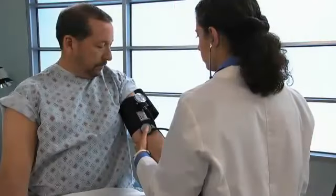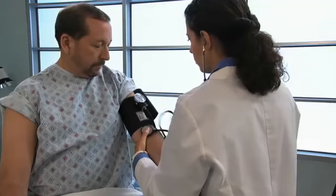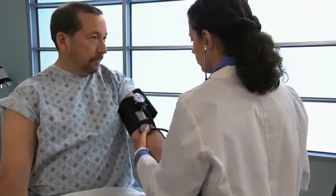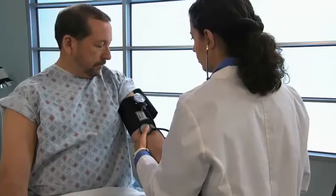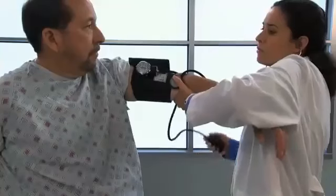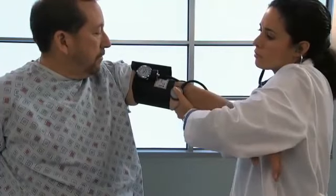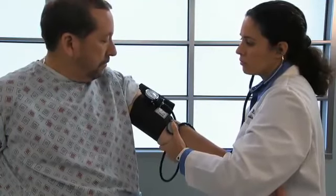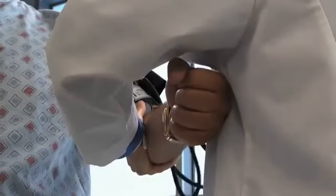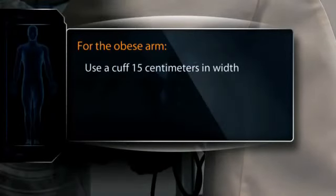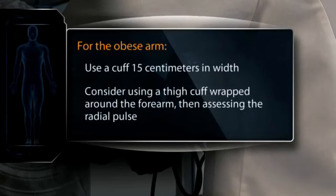If Korotkoff sounds are weak or inaudible, check stethoscope placement and skin contact with the bell, and consider venous engorgement or shock. To intensify Korotkoff sounds, try raising the patient's arm before and while inflating the cuff, then lower the arm and determine blood pressure. Alternatively, inflate the cuff and ask the patient to make a fist several times. For the obese arm, use a cuff 15 centimeters in width, or consider using a thigh cuff wrapped around the forearm and assessing the radial pulse.